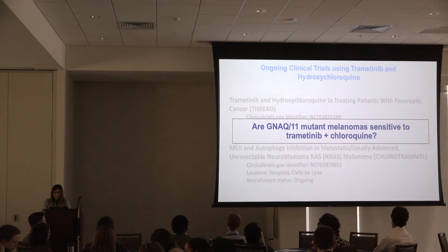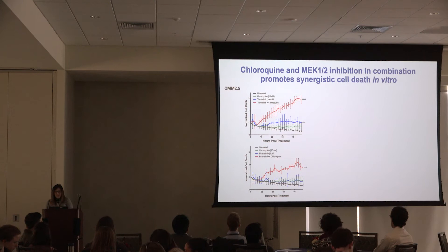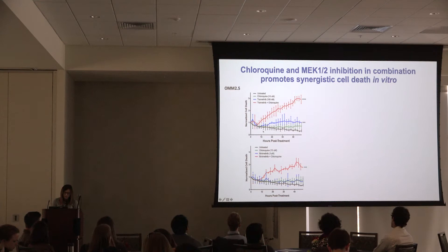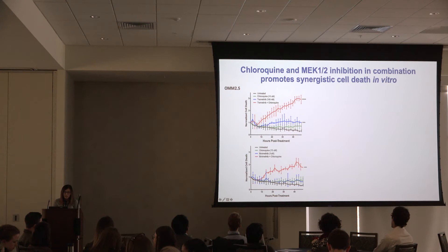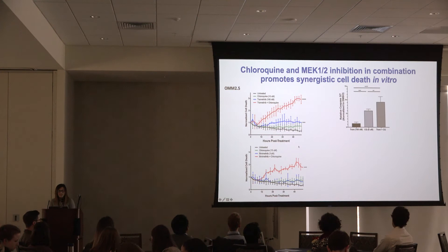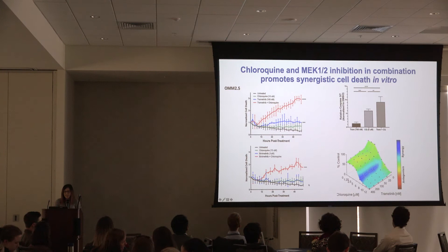We then asked whether this treatment strategy would work in GNAQ or GNA11 melanoma. Using the OMM 2.5 cell line — a GNAQ-mutated human metastatic uveal melanoma cell line — live cell imaging of cell death over time showed that the trametinib and chloroquine combination was the only treatment with increased cell death, seen with both trametinib and binimetinib. This was mediated by apoptosis as measured by Caspase 3/7 activity, and a synergy assay confirmed the combination is synergistic.